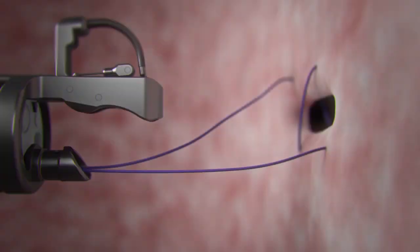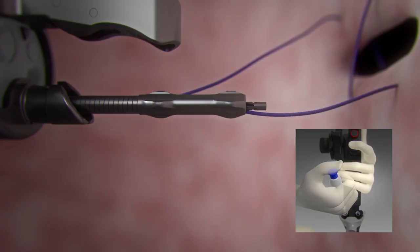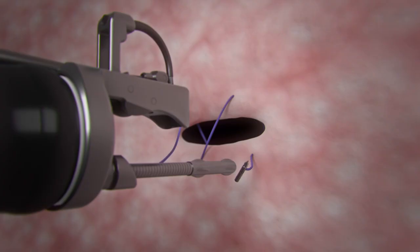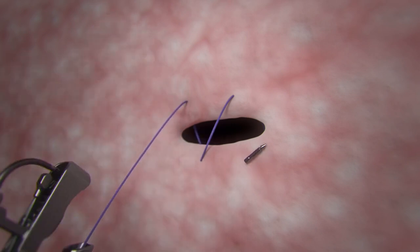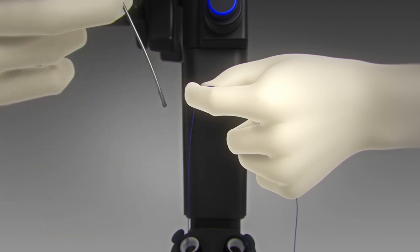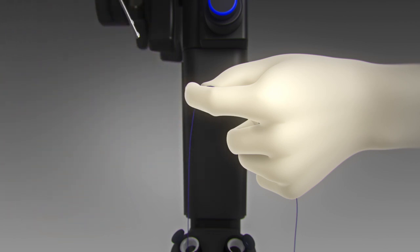To prepare for cinching, extend the anchor exchange catheter approximately 3 centimeters past the end cap. Press the blue button and pull back on the anchor exchange to release the anchor. Remove the anchor exchange catheter from the 3.7 millimeter scope channel, leaving the suture in place.